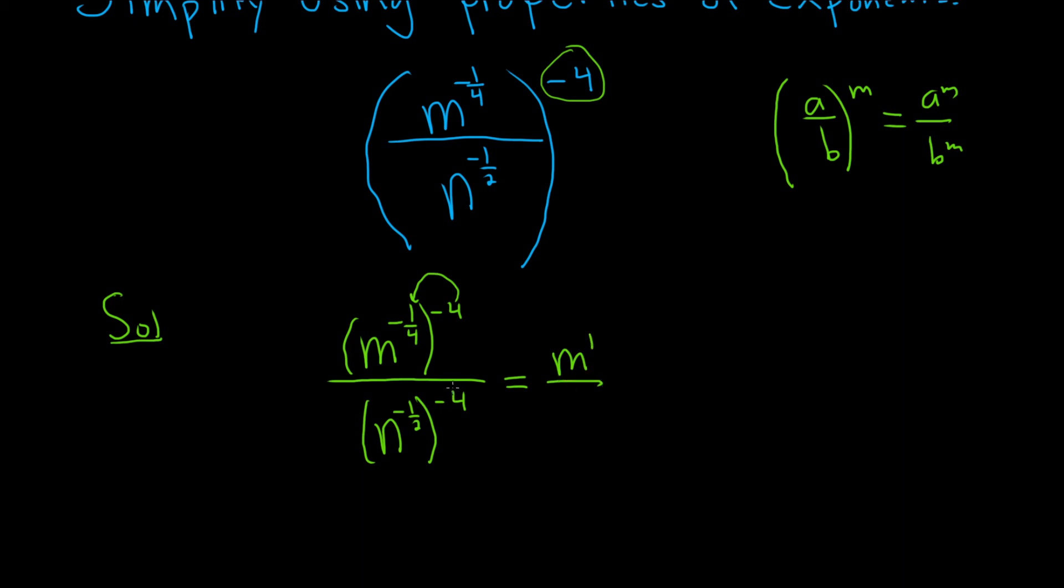and then same thing here on the bottom. We just do negative four times negative one-half. So negative four times negative one-half is just two. So you have n to the 2.